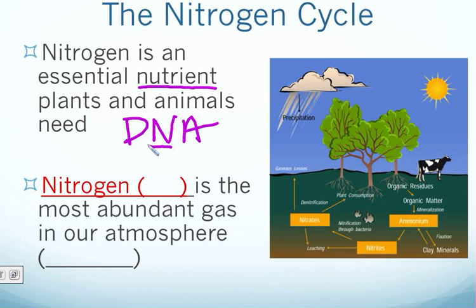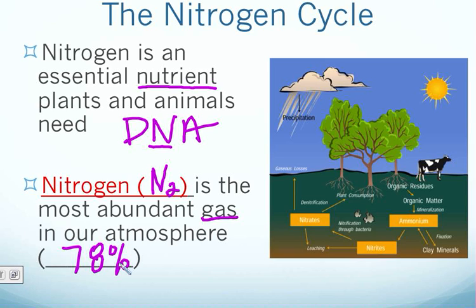Most of the nitrogen we find on earth is in the atmosphere. Nitrogen in the atmosphere is a gas known as N2 — nitrogen in its gas phase likes to bond with another nitrogen atom, forming the molecule N2. About 78% of our atmosphere is composed of nitrogen.